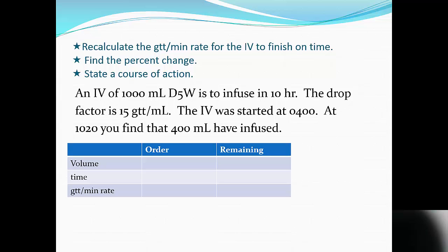We are going to do a problem where a change in the rate is required because the IV has gotten off track. Whether or not we can make that change depends on how much of a change it is — we may need to talk to the doctor. As we read the problem, we're going to fill information into the chart below, which is just an organizational tool to help us make sense of all the information in this problem.